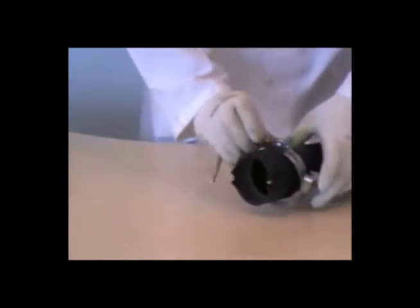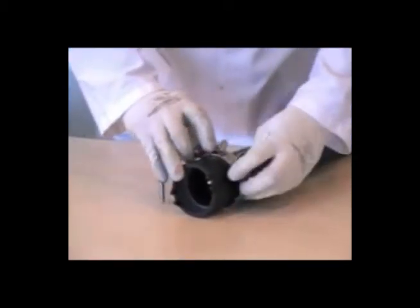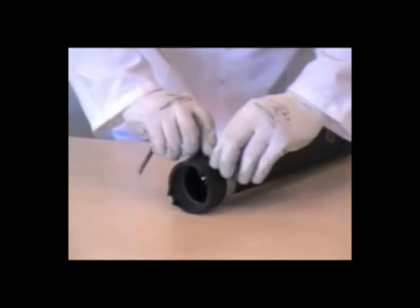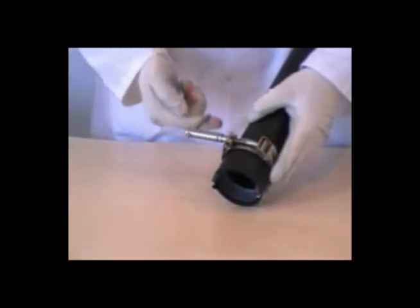Loosely fit the appropriate size clamp over the hub of the socket and position flush with the socket opening. It is important to tighten the clamp around the hub of the socket so to achieve a homogeneous joint.